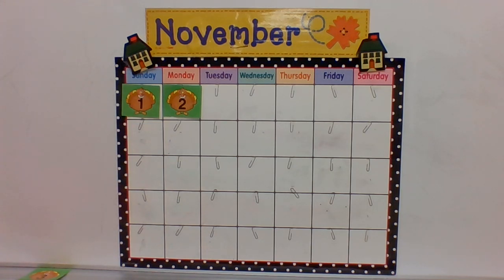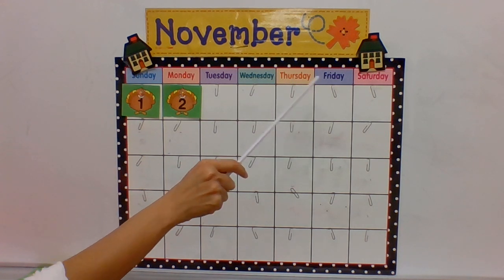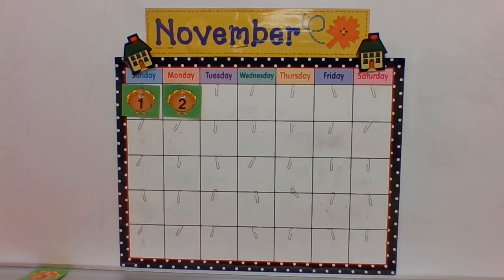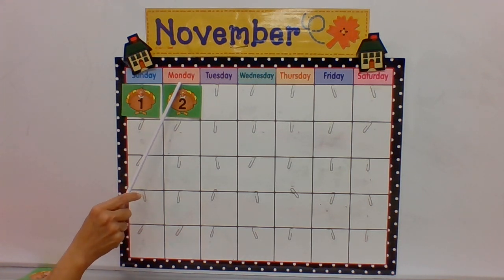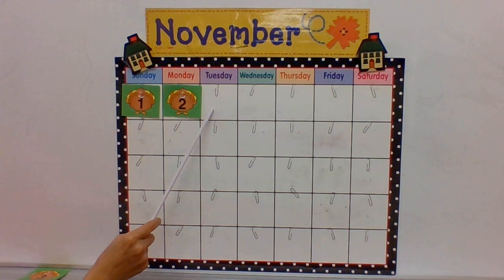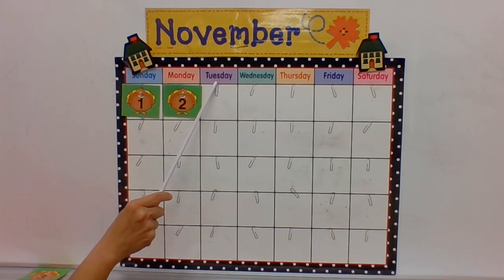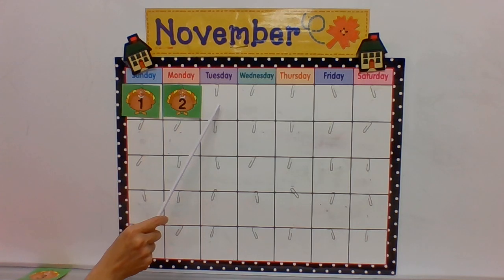There are seven days in a week. In November there's Sunday, Monday, Tuesday, Wednesday, Thursday, Friday, Saturday. Yesterday was Monday, November 2nd. What is today? Yesterday was Monday, so what's today? It's Tuesday!